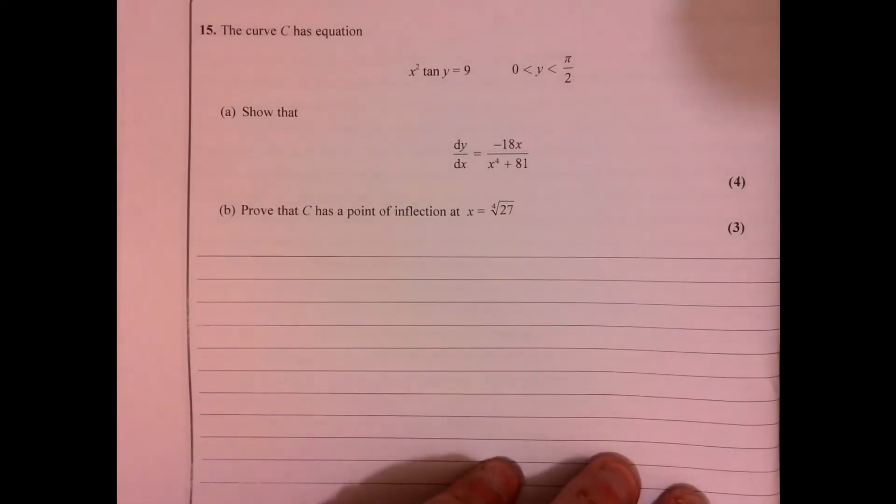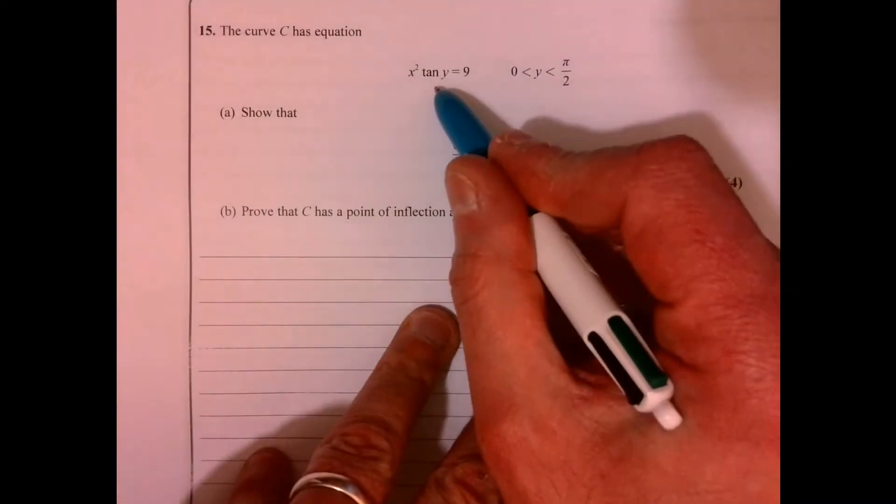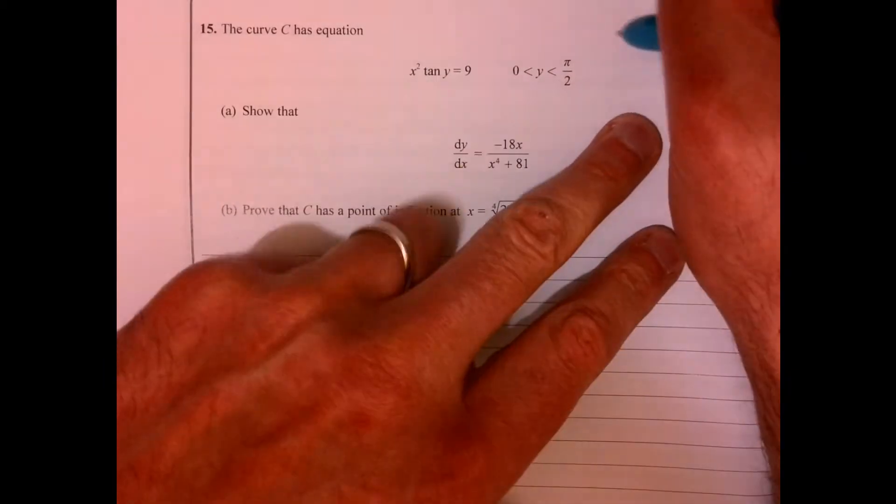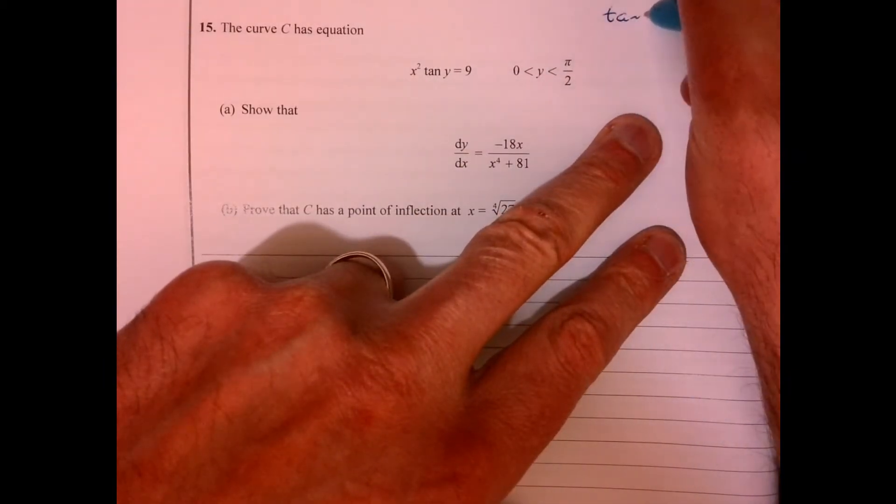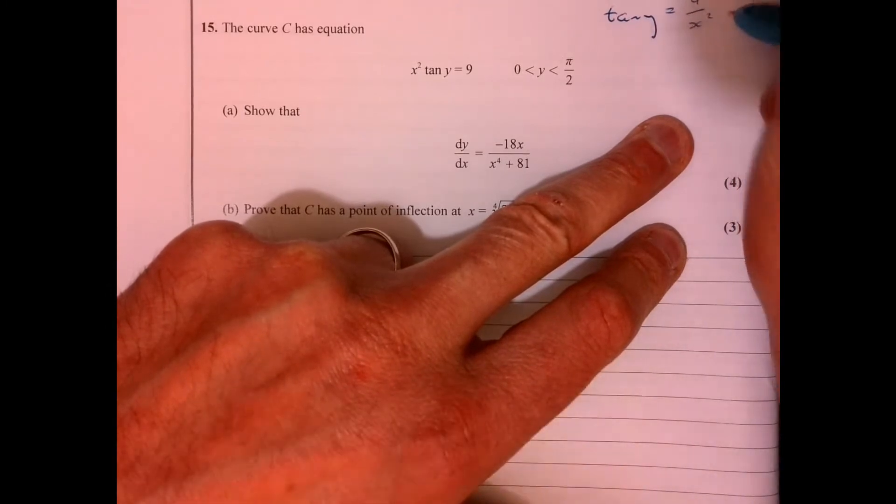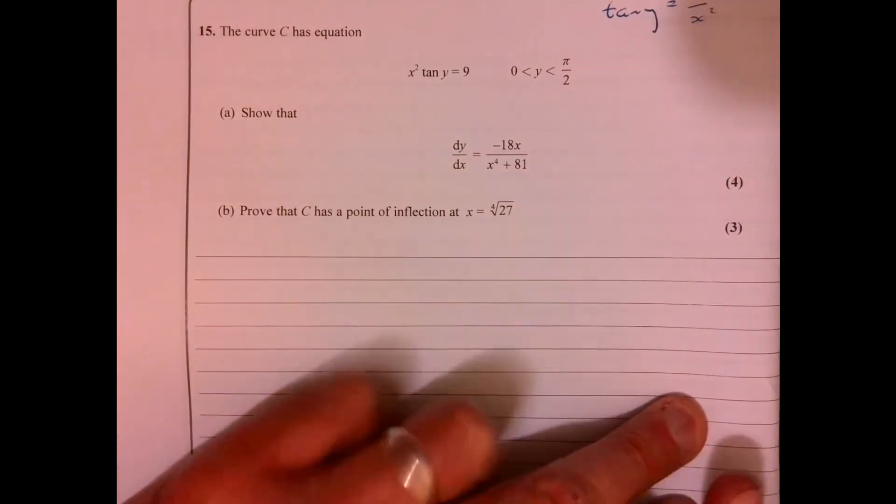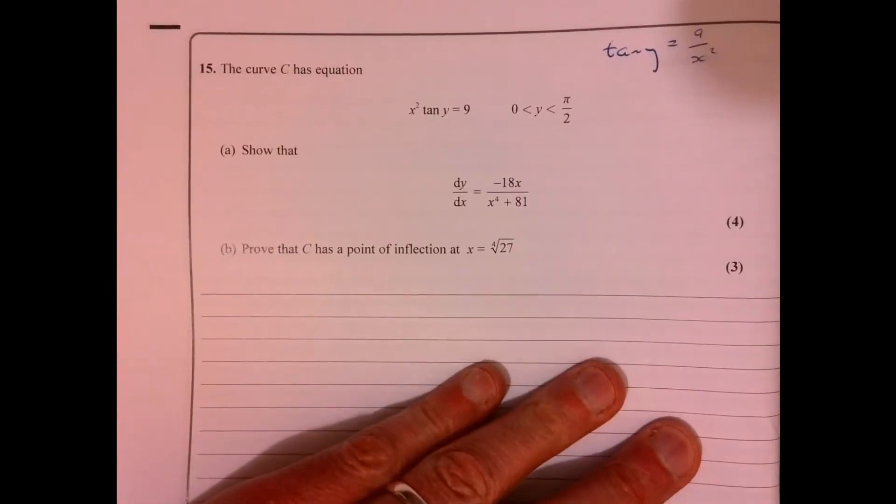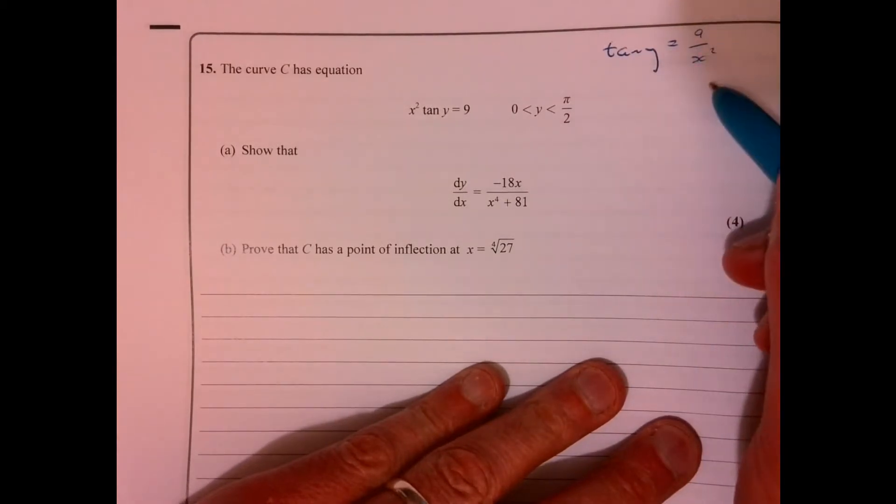Question 15. So I'm going to start this by just rearranging this here. Let's write things that just might be useful in a minute. So that's okay, isn't it? Tan y equals 9 over x squared.